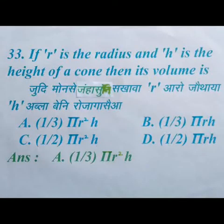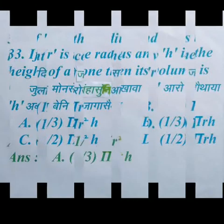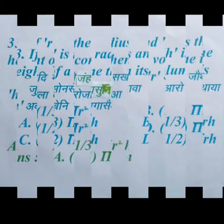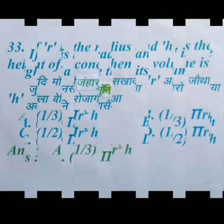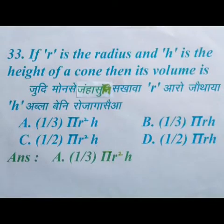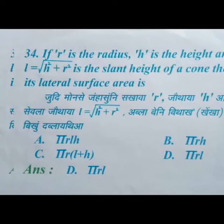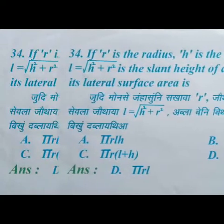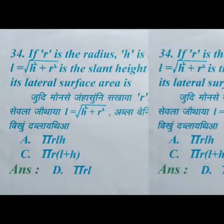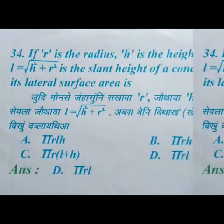If R is the radius and H is the height of a cone, then its volume — we have four options and the right answer is option A: one third of pi r square h. If R is the radius, H is the height, and L equals root over (H square plus R square) is the slant height of a cone, then its lateral surface area